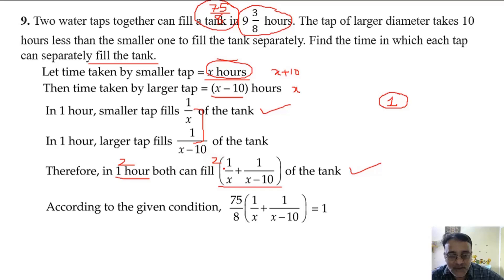In 2 hours multiply by 2. In 3 hours multiply by 3. And in this much time, 75 by 8, multiply by this much and your tank is full. Full means I told you that you have to take 1 as full. Is this clear? Yes, sir.